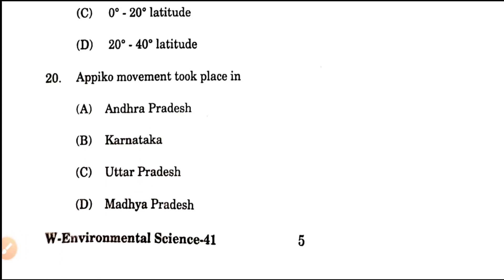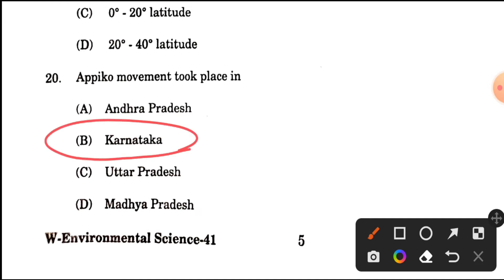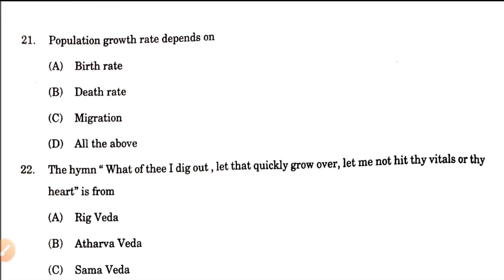Question number 20: Appiko movement took place in when? The Appiko movement took place in September 1983, in which the men, women, and children of the Salkani group hugged the trees in Kalasa forest. The local term in Kannada for hugging is 'Appiko.' So the Appiko movement took place in Karnataka. Option B is the correct answer.